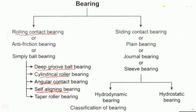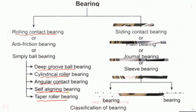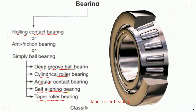The next type is the taper roller bearing. The bearing is inserted at a slight taper depending on the requirement. Such type of bearing is called taper roller bearing.